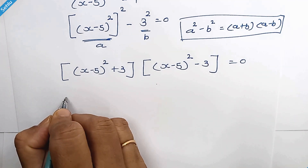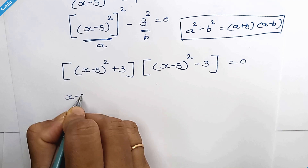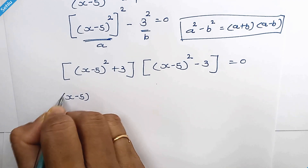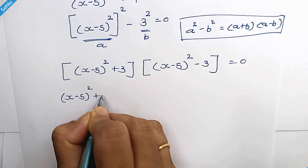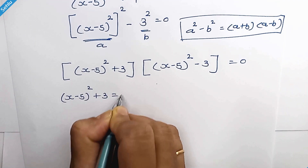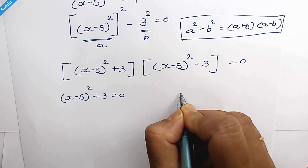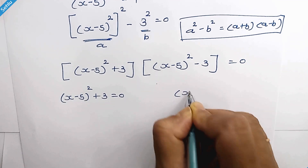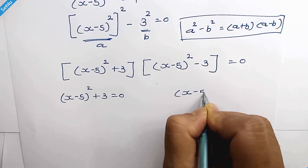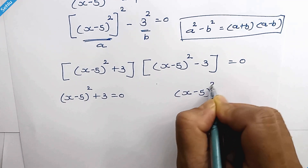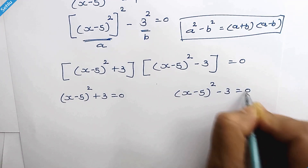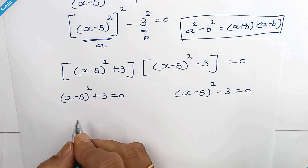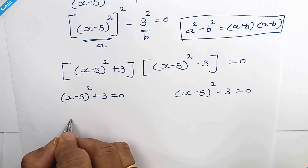From here we can split into two equations: (x minus 5) whole square plus 3 is equal to 0, or (x minus 5) whole square minus 3 is equal to 0.